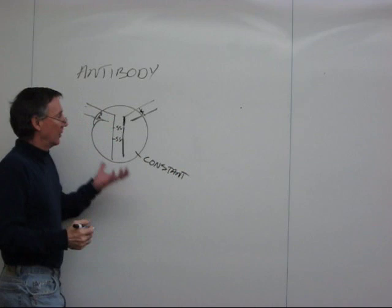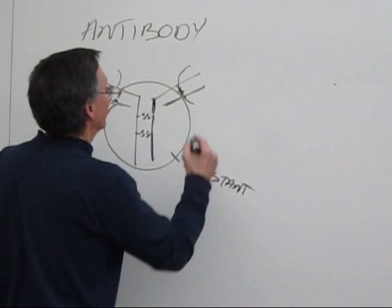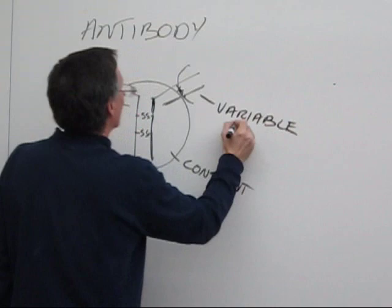All the different antibodies you make, this part would be the same. Out here at the ends of this Y-shape are the parts that are specific and these are highly variable. So you can make antibodies that will bind to lots of different things.